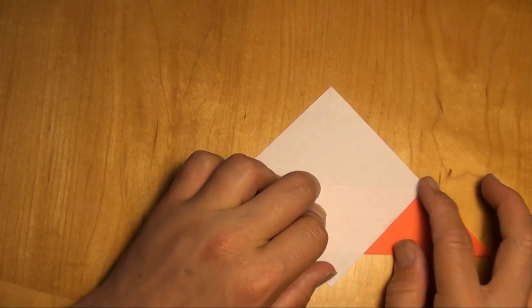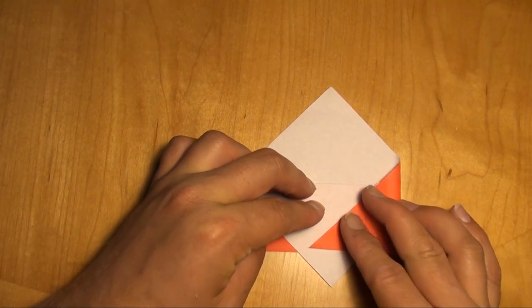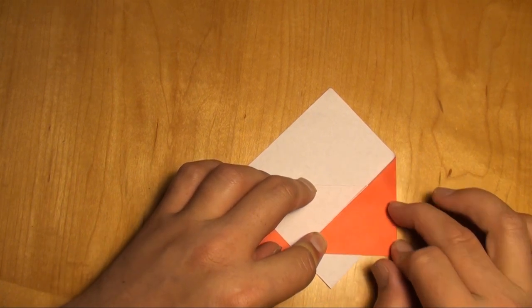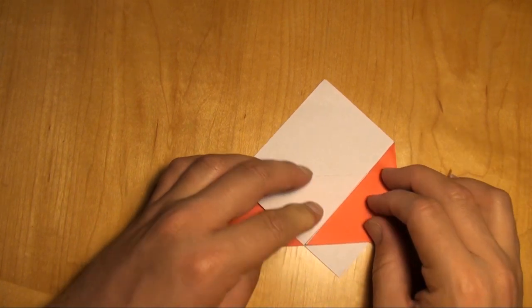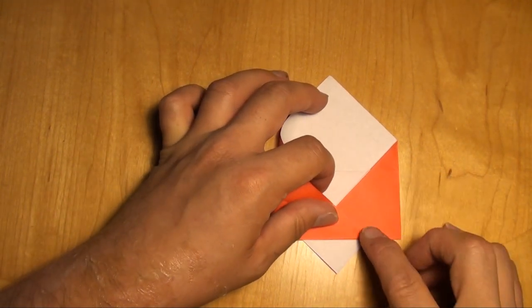And now we're going to take this corner and we're going to fold it over so that it hits this intersection point right there. And we take the left side and fold it so that it hits this intersection point.